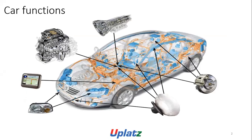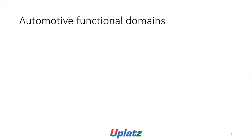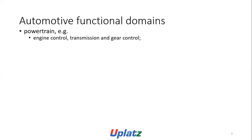Core functions are depicted in a figure. There is a headback, there is a VCU, engine control, steering control, anti-lock braking system, and so on. Automotive functional domains: powertrain — for example, unit control, transmission and gear control.